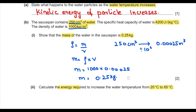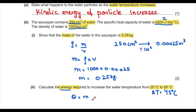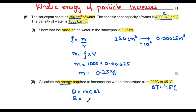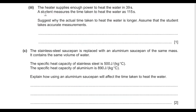Calculate the energy required to increase the water temperature from 20°C to 65°C — a temperature change of 45°C. Using Q = mcΔT: Q = 0.25 × 4200 × 45 = 47,000 joules.